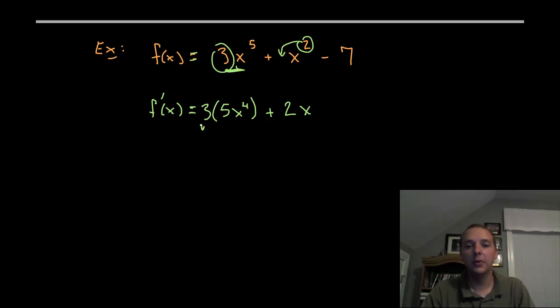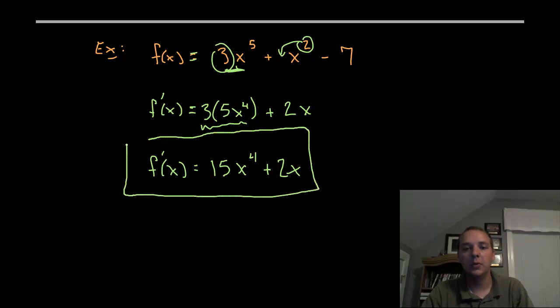Now whenever you have the constant multiple rule we should also clean that up a little bit. So our final answer for this one would be 3 times 5 is 15x to the fourth plus 2x. Now the more of these that you do, you'll be able to basically skip this middle step and just treat it as the power coming down and immediately multiplying times the coefficient because that's really what's happening. We just have to make sure we keep all these rules straight in our head.